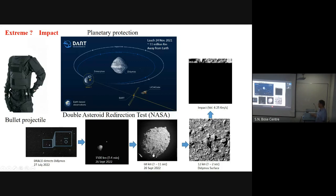We have been working on this problem for quite some time, doing simulations at different levels to understand how things work. The target was something like 11 million kilometers away. A camera called DRACO — installed by an Italian agency — was recording along with another camera. The mission was co-funded by ESA and JAXA as well. We could see the asteroid at T-minus 11 seconds, T-minus 2 seconds, and then impact. After that, we calculated the orbital path change and got results better than expected.